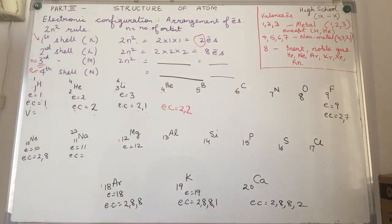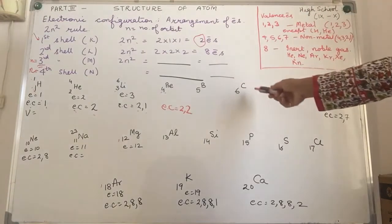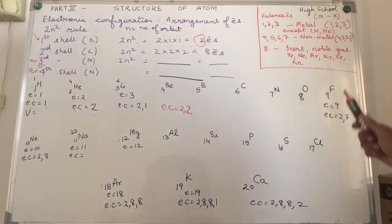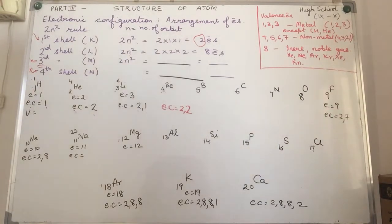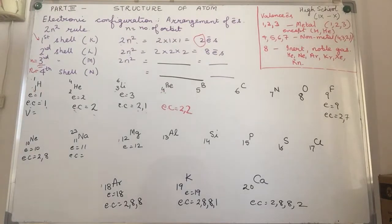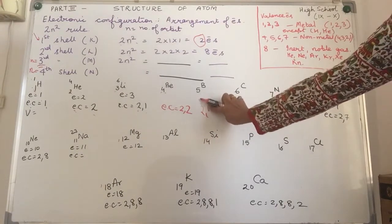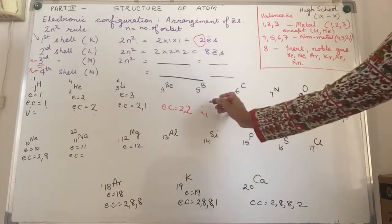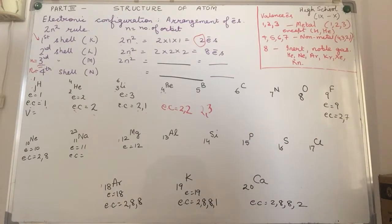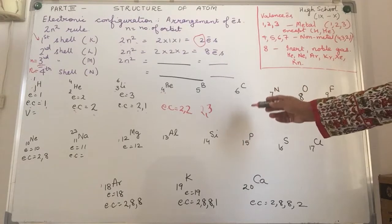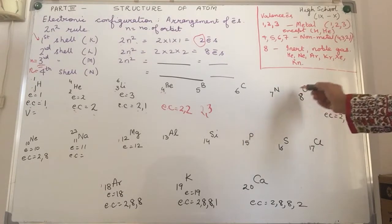Try the electronic configuration of boron, carbon, nitrogen, and oxygen yourself — you learn by doing. The answers are: boron is 2, 3; carbon is 2, 4; nitrogen is 2, 5; oxygen is 2, 6. Notice that electrons in different energy levels are separated by a comma. Fluorine is 2, 7.